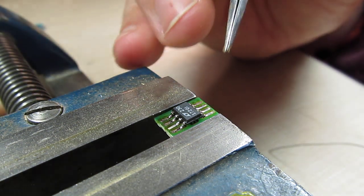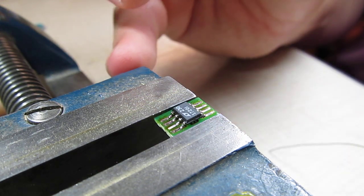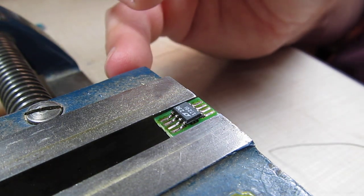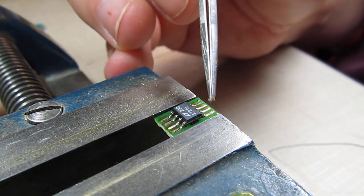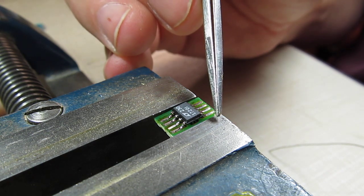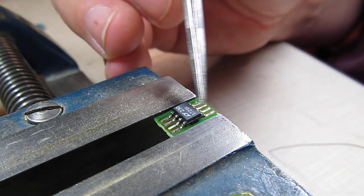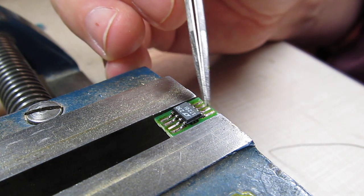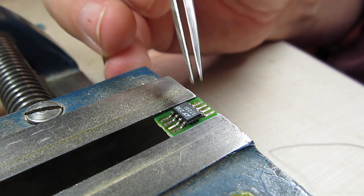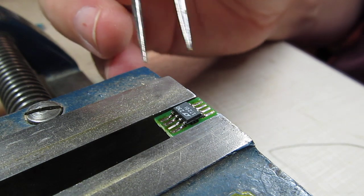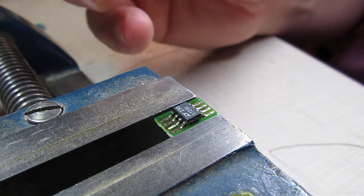For finer pitch devices, finer pitch than this SOIC, there's another neat technique called drag soldering where you create a little ball of solder and just run the iron past all the leads. If you've got enough flux in there, the solder will tend to ball up just on the metal and not cause bridges. So maybe we'll do that in a future video.